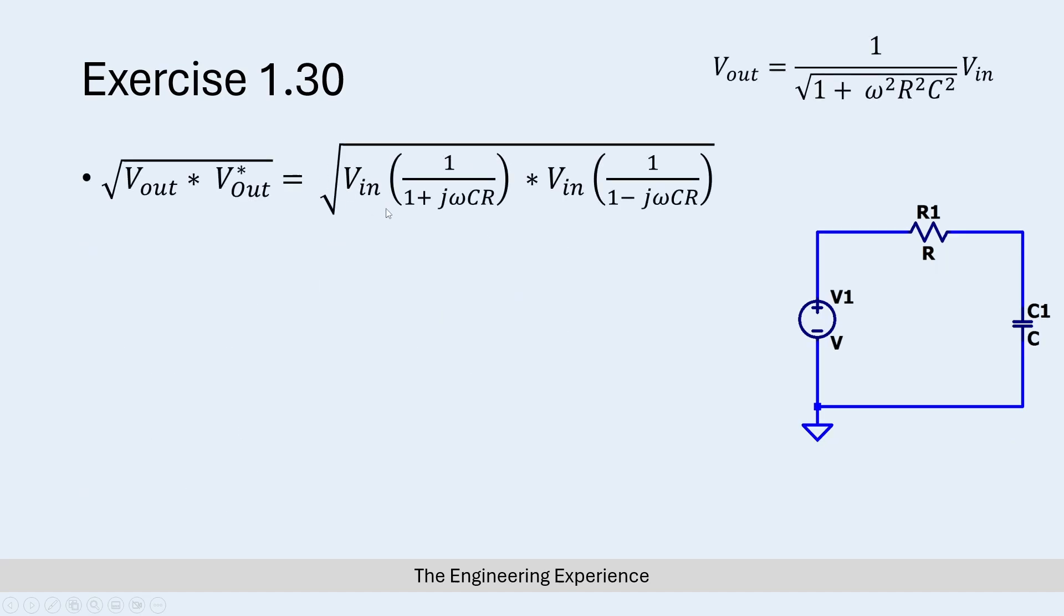This is the result after plugging in those two equations. We've got V_out as you remember from the previous slide was V_in multiplied by 1 over 1 plus jωCR, and the complex conjugate was V_in multiplied by 1 over 1 minus jωCR.